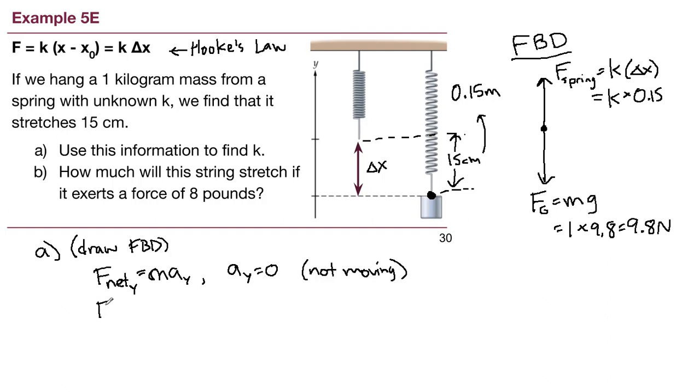With that in mind then we have the spring force pointing up minus gravity pointing down and that equals 0. So we have 0.15 times our unknown spring constant k minus 9.8 equals 0.